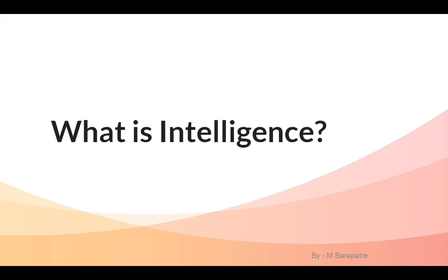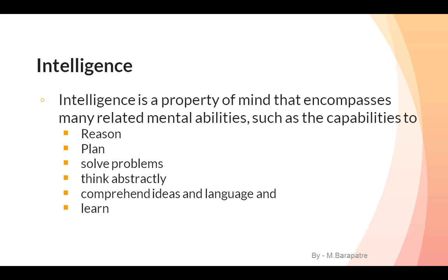Before discussing Artificial Intelligence, we need to know what intelligence is. Intelligence is a property of mind that encompasses many related mental abilities, such as the capability to reason, plan, solve problems, think abstractly, comprehend ideas and language, and learn. That is what intelligence is about.